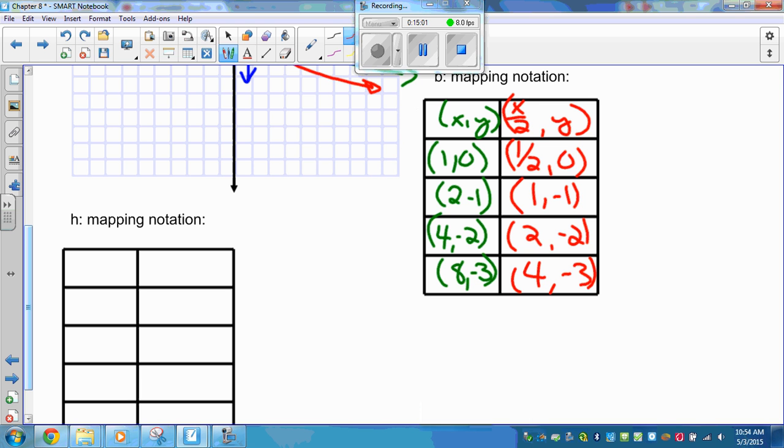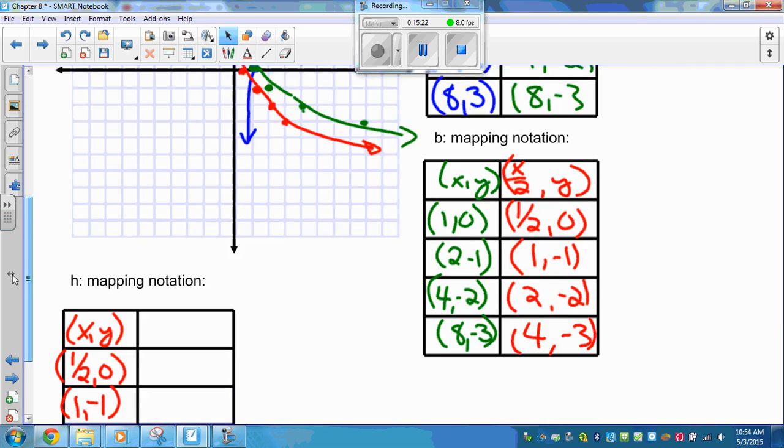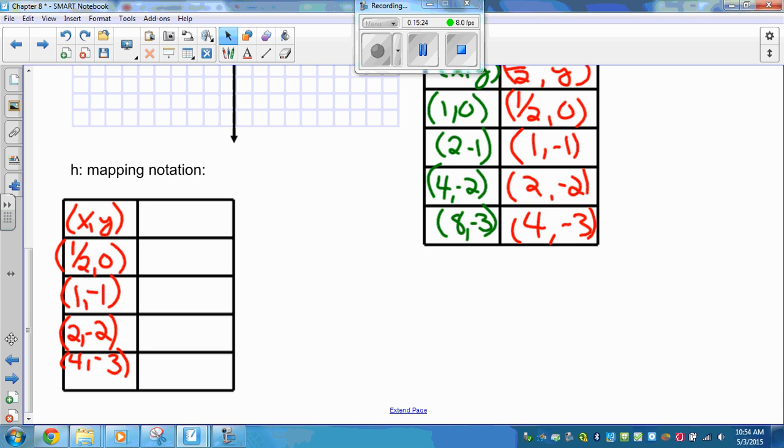So we're taking those original points, the red points that we've already applied the transformations to. So I'm just copying from the previous graph. 2, negative 2, 4, negative 3. And now I'm doing my H translation. H was negative 3. So what I'm doing is I am taking my point. My X value goes down by 3. My Y value stays the same. So 1 half minus 3 is minus 2.5 and 0.